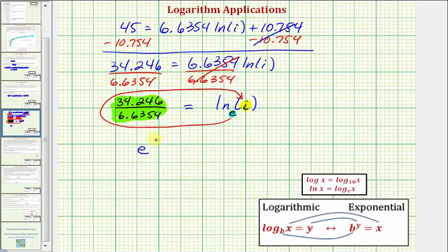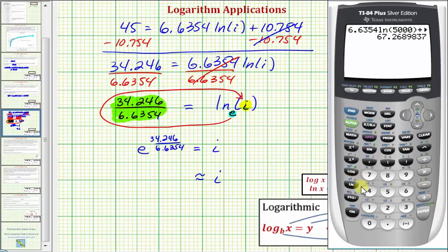Again, we have e raised to the power of this quotient, 34.246 divided by 6.6354, equals I. And now we'll go to the calculator to get an approximation for I. To enter e, we can press second natural log, that brings up e raised to the power of, and our exponent is 34.246 divided by 6.6354, and enter.